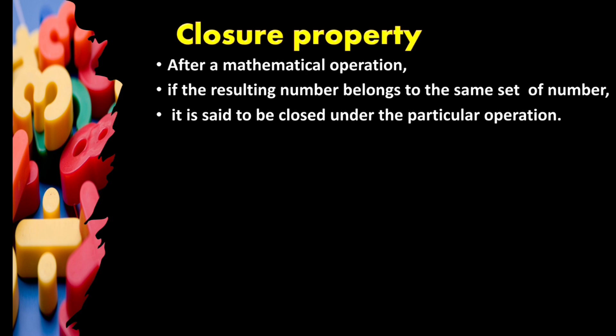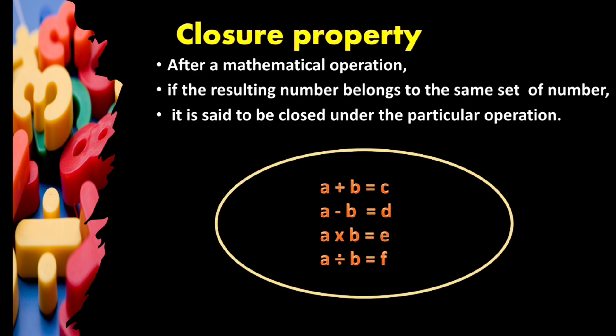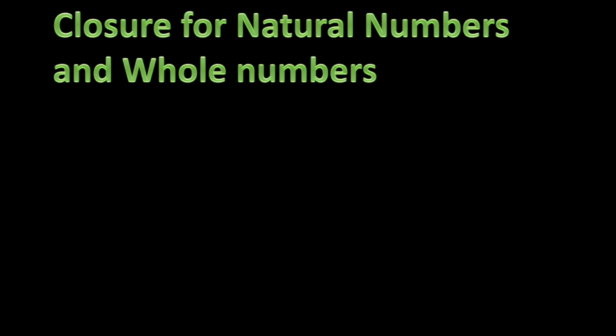Let us take one example. A and B are from the same set of numbers, and the resulting numbers C, D, E, F are obtained after doing the operation. If those resulting numbers also belong to the same set of numbers, it is said to be closed under that particular operation. Now let us understand this one by one for each number system.